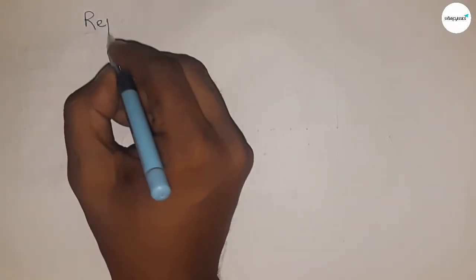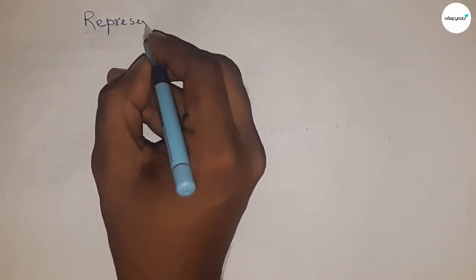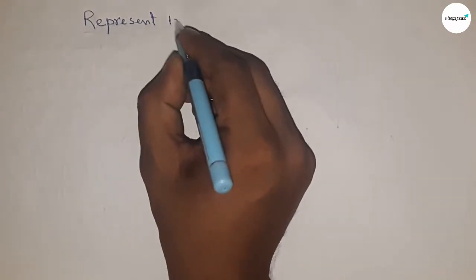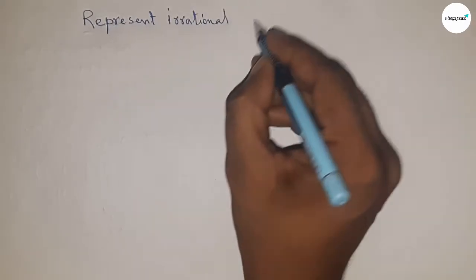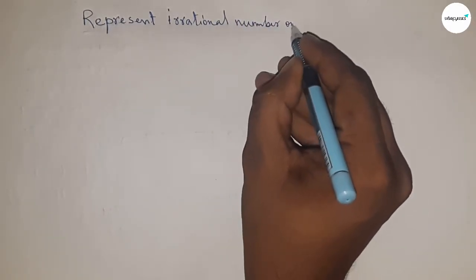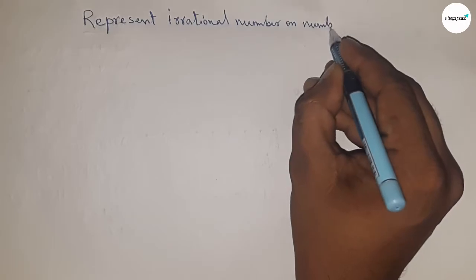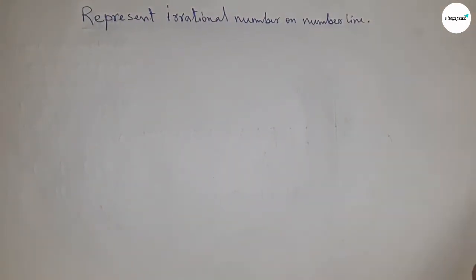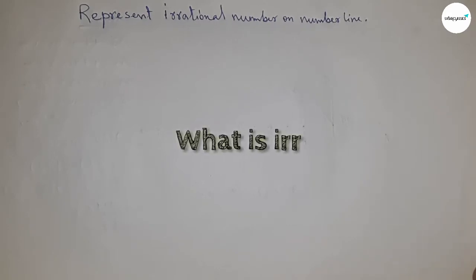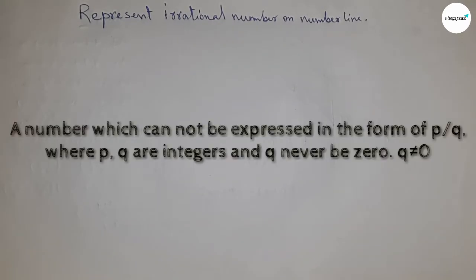Welcome to SSR classes. Today we are talking about how to represent irrational numbers on a number line. First of all, what is an irrational number? An irrational number is a number which cannot be expressed in the form of p by q, where p and q are integers and q is never zero.